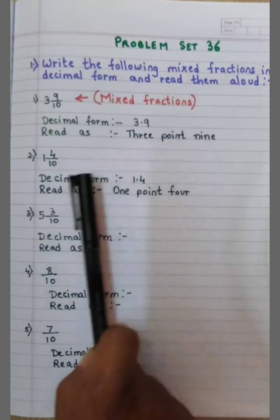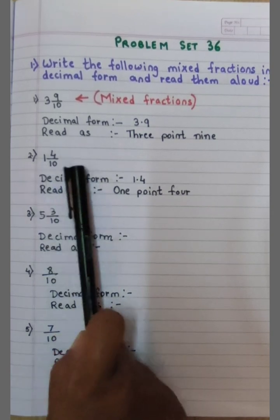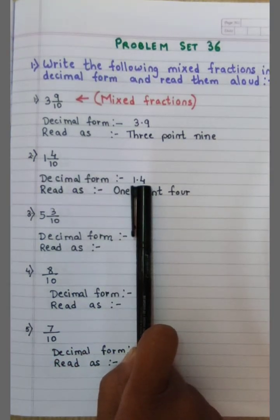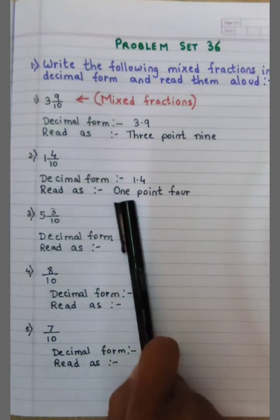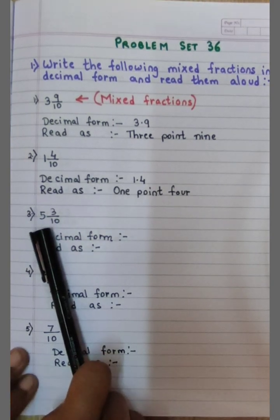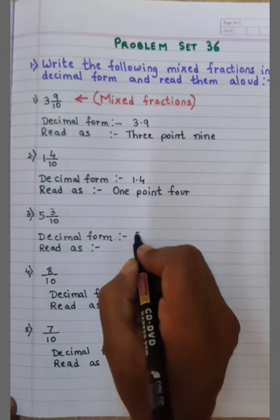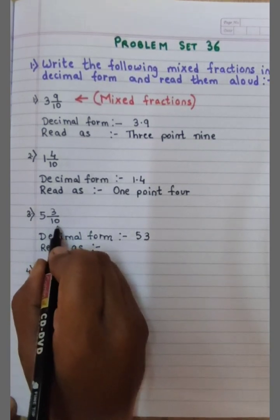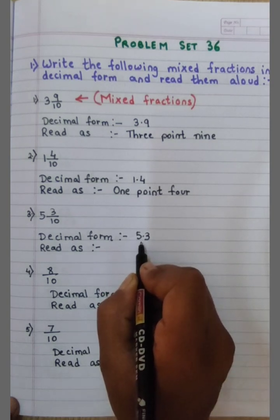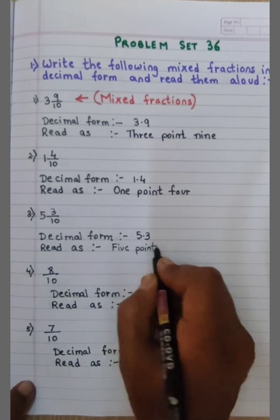This is the decimal form and we read it as 3.9. Second example: 1 and 4 upon 10. In decimal form I write 1 and 4 — I have one 10, so I place the decimal point before the digit 4. I read this number as 1.4. Third example: the mixed fraction is 5 and 3 upon 10. I write the numbers 5 and 3. I have one 10, one zero, so I place the decimal point before one digit — before 3. I read this number as 5.3.